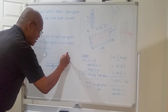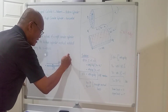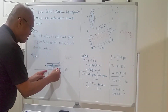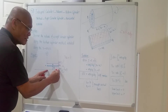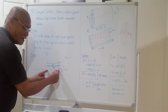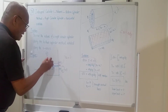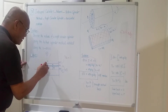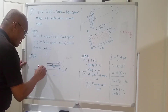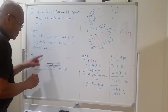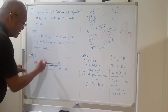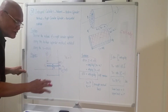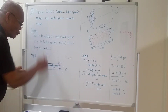xr equals h — this distance is h, the height of the cylinder. And xl is also a vertical line; luckily, xl coincides with the y-axis.